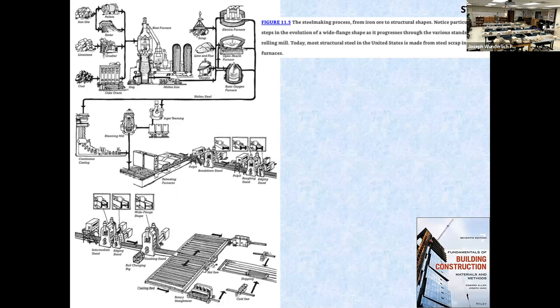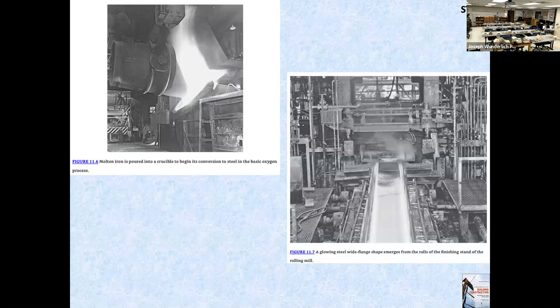The process of making steel — you can look at the diagram here in detail. You can see it's molten hot, poured into a crucible and then shaped and rolled in rolling mills.